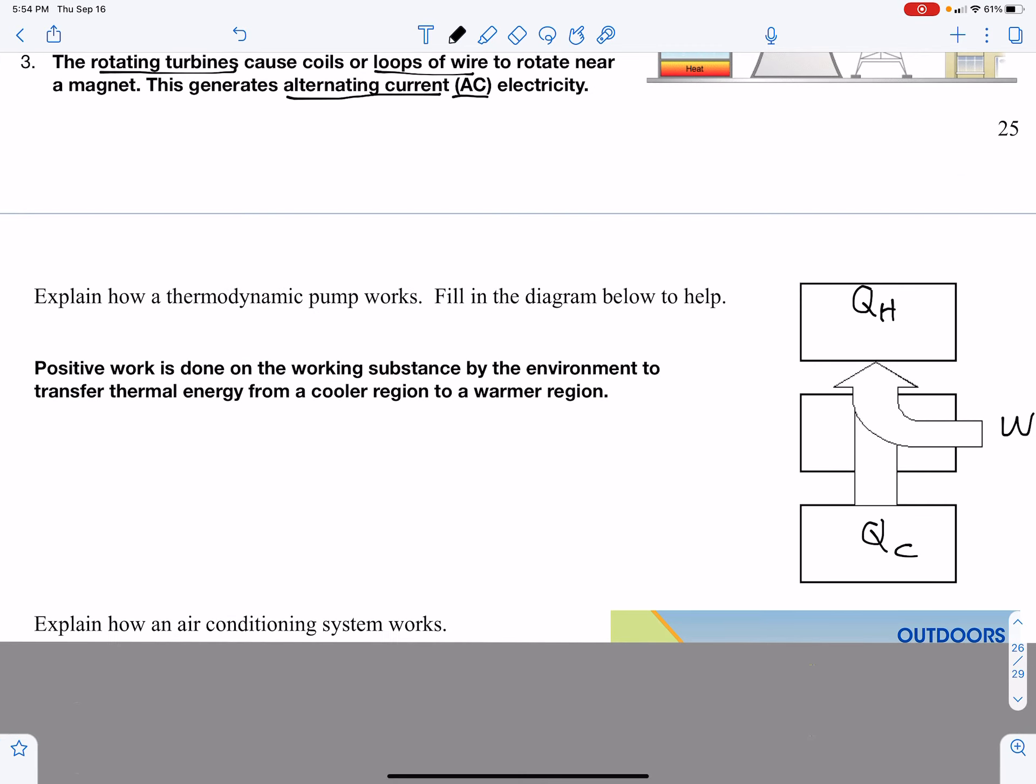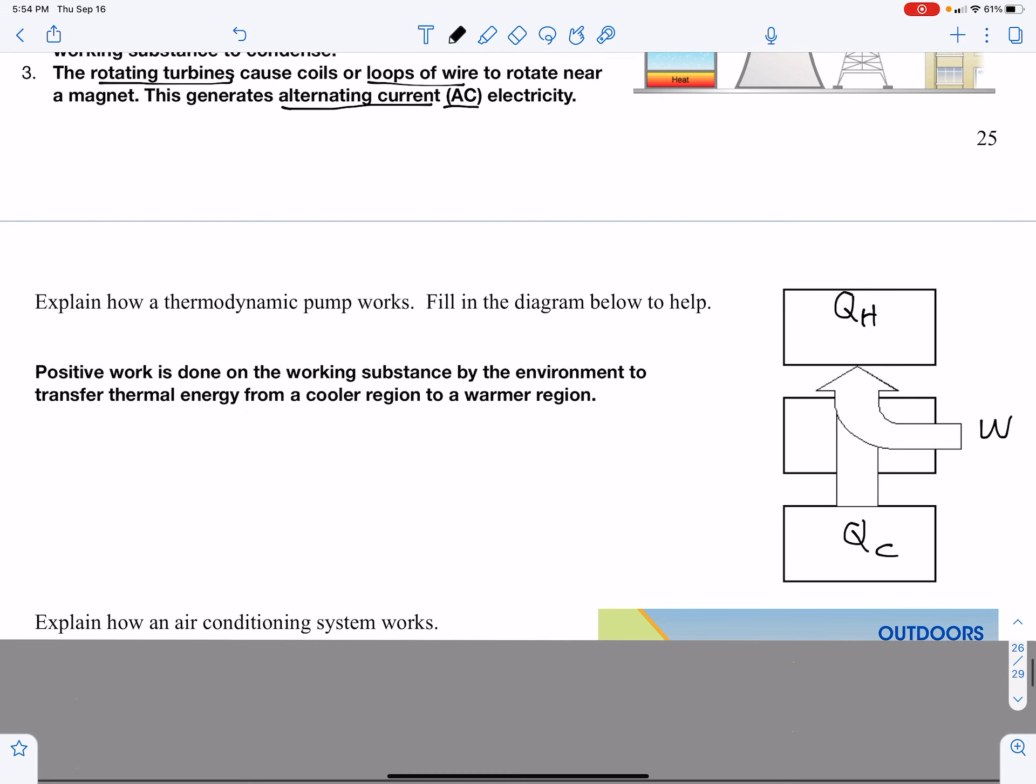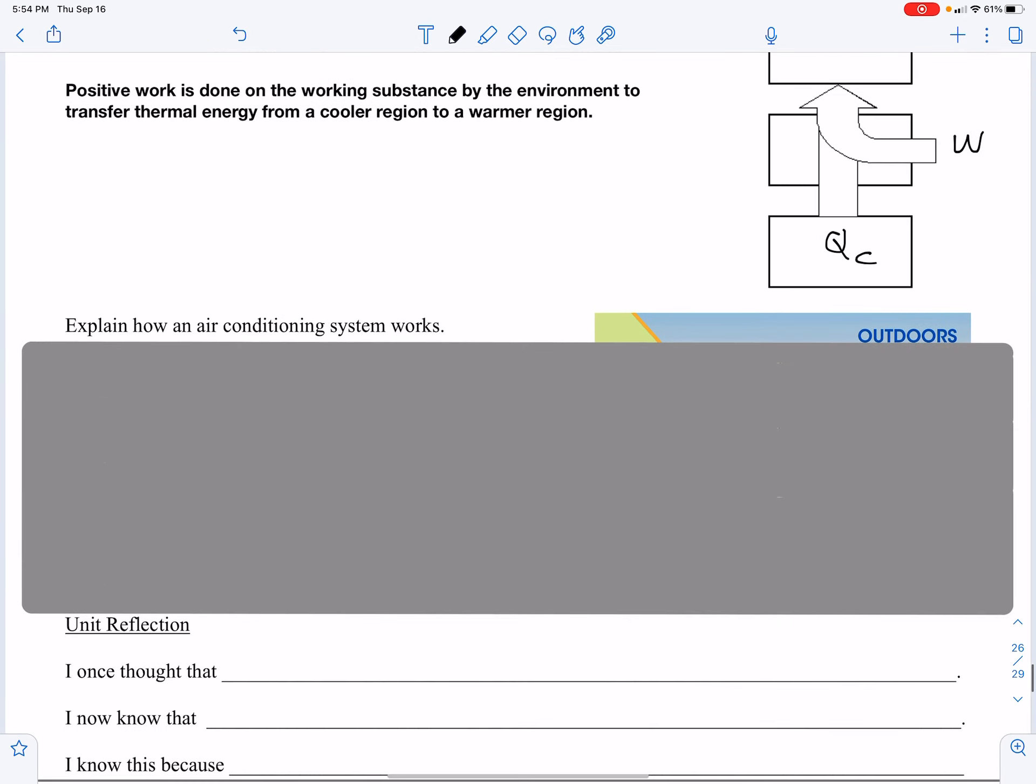We do work to bring heat from a colder region to a higher region. Positive work is done on a working substance. The working substance is usually going to be some refrigerant. In most cases, that refrigerant is, at least for refrigerators, known as freon. Work is going to be done on that refrigerant to transfer energy from a cooler region to a warmer region. That is the ultimate goal. It's working exactly backwards.